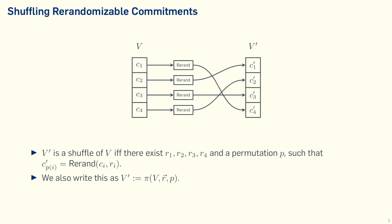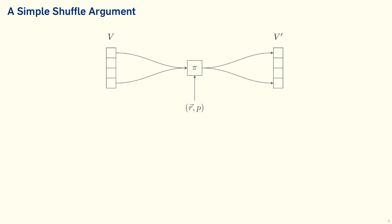A shuffle argument — a zero-knowledge argument in particular — is one we can use to prove that V prime is in fact a shuffle of V. This is the situation we start with: we have V and V prime, we know there exists a shuffle, we know what this shuffle is (R and P), and we want to prove that this R and P exist.